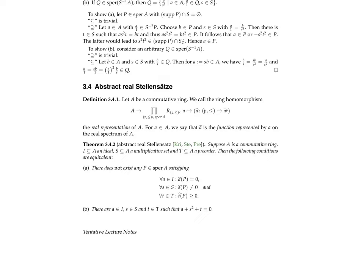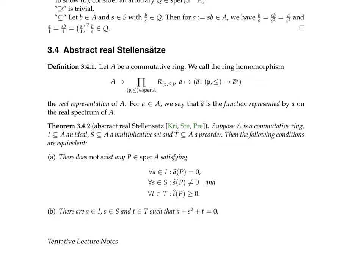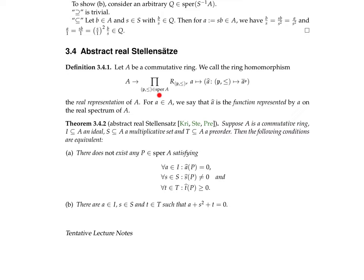Now we want to turn this abstract Realstellensatz into a concrete one, where we don't work with the real spectrum of a commutative ring but with a more down-to-earth geometric space. For example, when we have a ring of polynomials over a field in finitely many variables, we can try to view these polynomials as functions on a more concrete space.